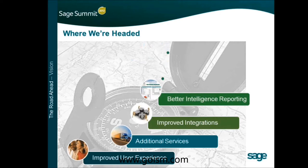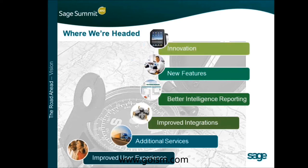So where is Sage headed? They are really focused on improving the user experience — improving the interface, improving lookups, making things easier to use. Beyond this next release, that will be one of the key points going forward. They're also working on additional services: improved integrations with other products, better business intelligence reporting, and innovation — meaning a lot of stuff with tablets, and how everything integrates with the Sage 500 product from a tablet base.